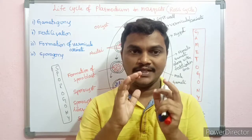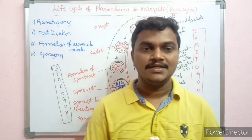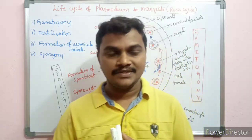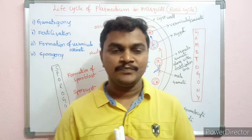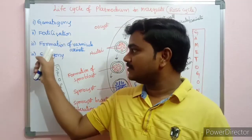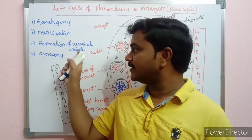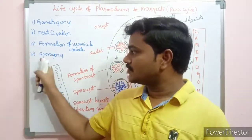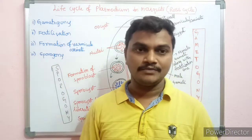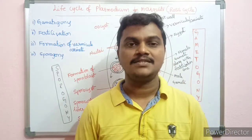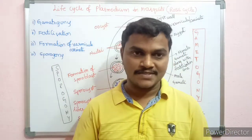If we look at this cycle, we start with gametocytes, then fertilization, then formation of vermicule or ookinete. There are four stages we have to cover in the mosquito life cycle.